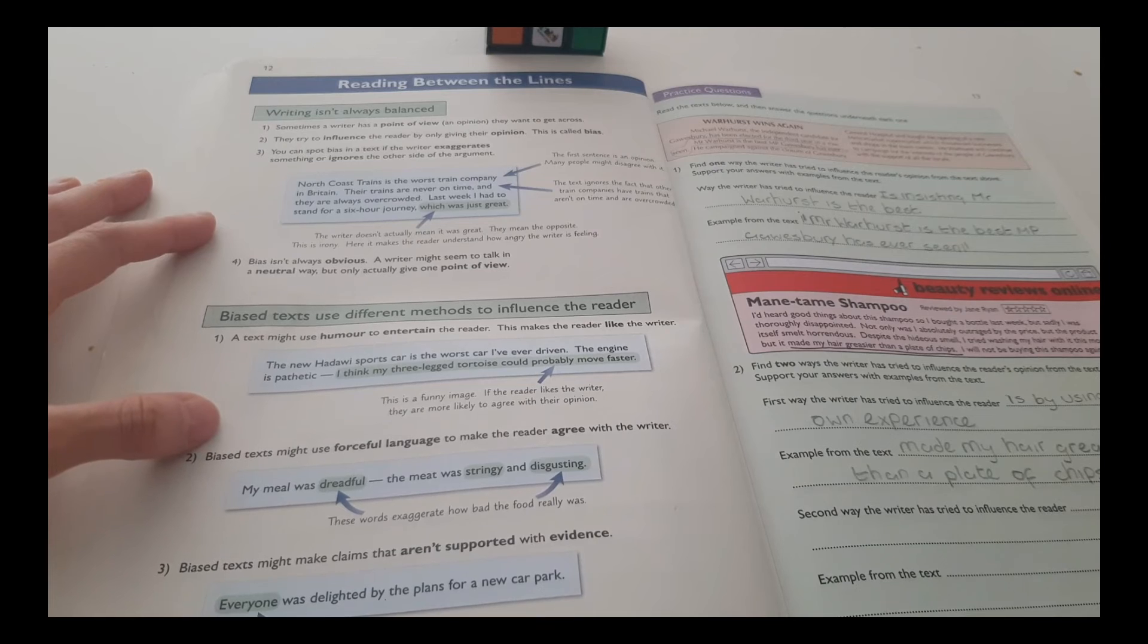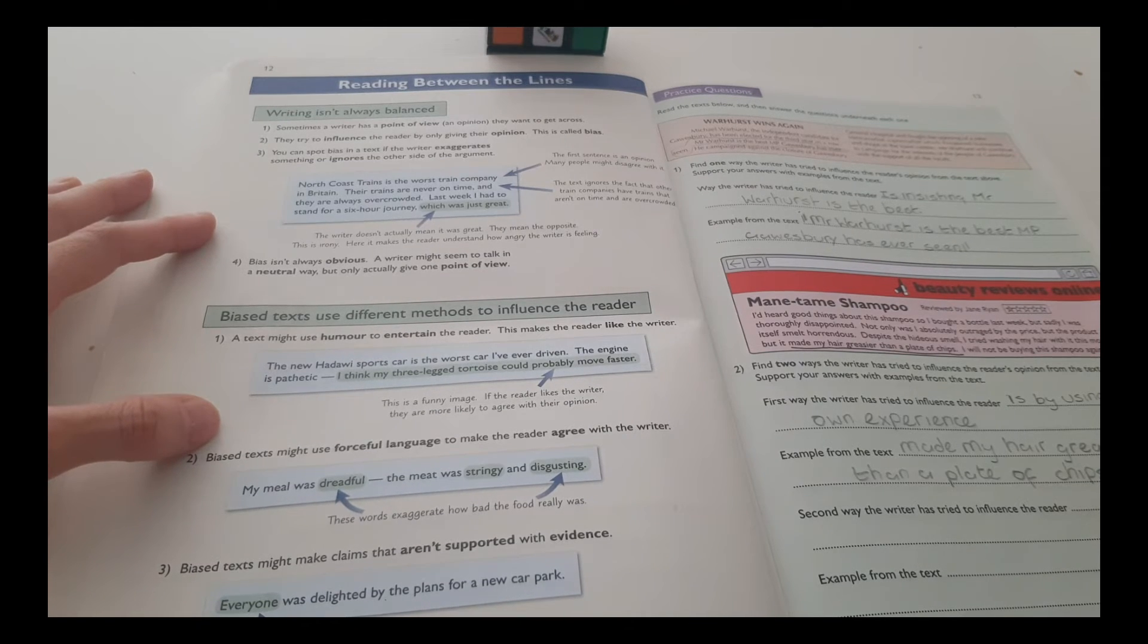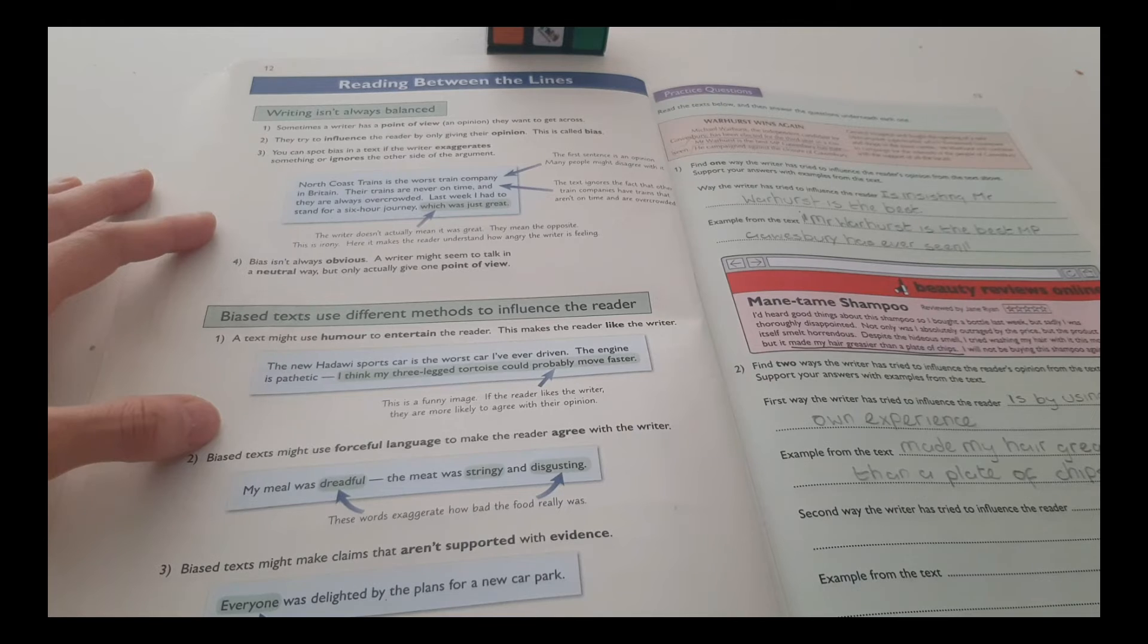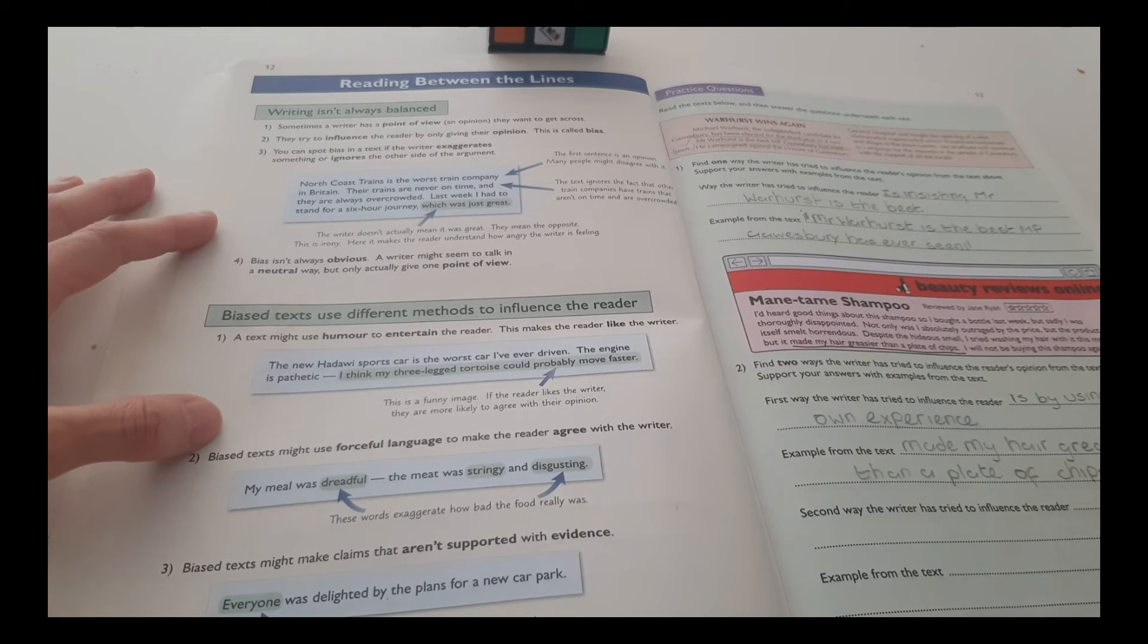Biased text might use forceful language to make the reader agree with the writer. My meal was dreadful. The meat was stringy and disgusting. These words exaggerate how bad the food really was.